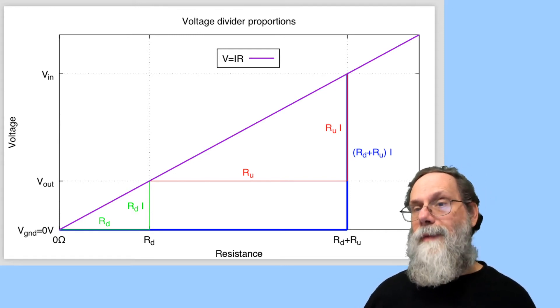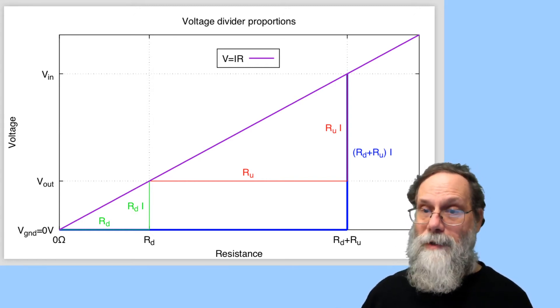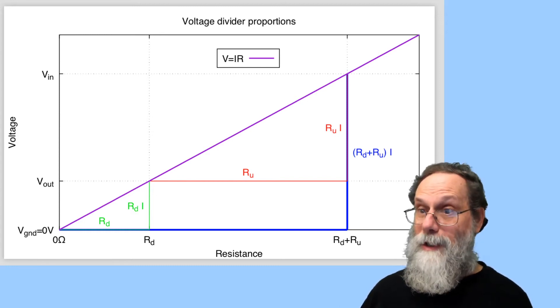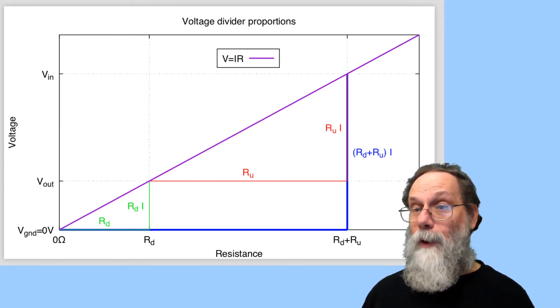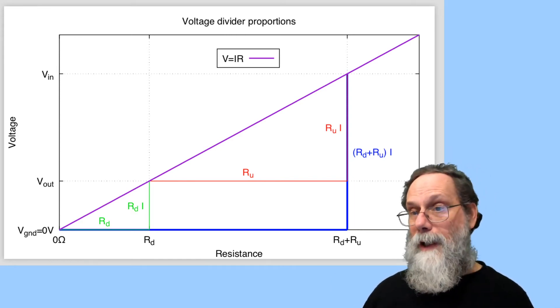So here we can take a look at what is Rd plus Ru. We can think of that as just having two line segments along the x-axis, one Rd on the left there and one Ru on the right, which is here drawn in red. And so we have Rd plus Ru coming out to the bottom triangle there.